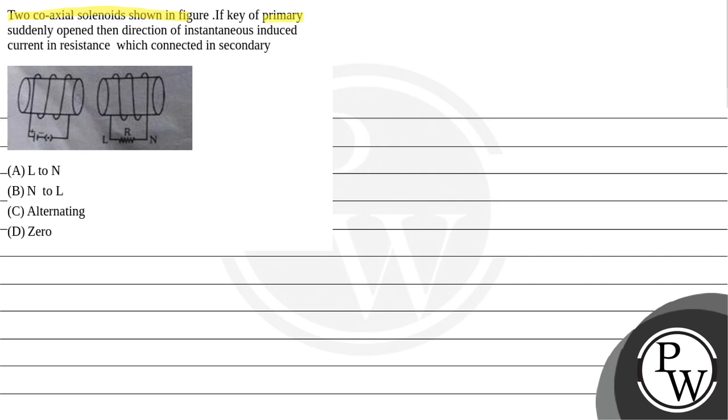If key of primary suddenly opens then direction of instantaneous induced current in resistance which is connected in secondary is: option A L to N, option B N to L, option C alternating and option D zero.